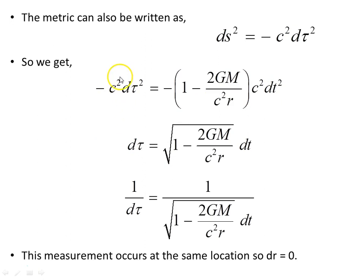So that's minus 1 minus 2GM over c squared r times c squared dt squared. The minus is cancelled, divided through by c squared, d tau becomes the square root of this object here. And 1 over d tau, which we will use shortly, is 1 over that object there. So just keep this in mind as well. We're going to use this shortly. Now, just a point too, again, the measurement occurs at the same location, so dr is equal to zero.